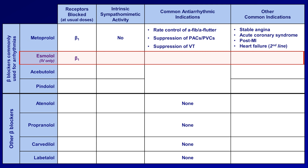Esmolol is also cardioselective and has no intrinsic sympathomimetic activity. Because it's only available IV, it has no long-term use and is limited to rate-controlling AFib and AFlutter in hospitalized patients. Its very short half-life is most well-suited for patients with rapid AFib or AFlutter who are hemodynamically tenuous, but in whom you are trying to avoid cardioversion due to stroke risk from a lack of anticoagulation. This doesn't come up often, and thus esmolol is a relatively uncommon drug to see used.